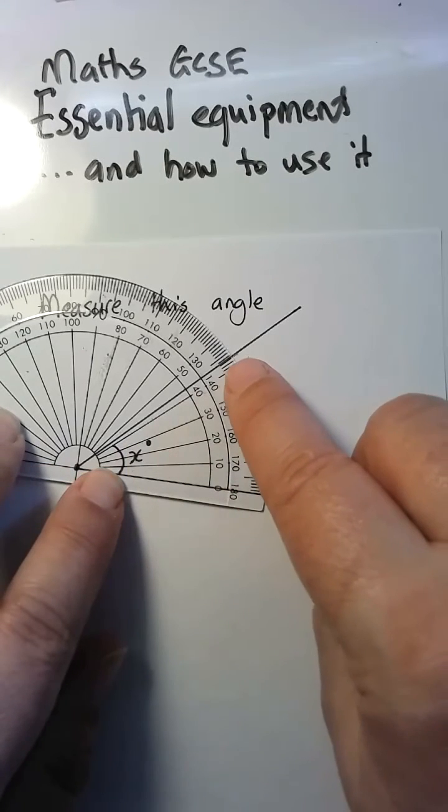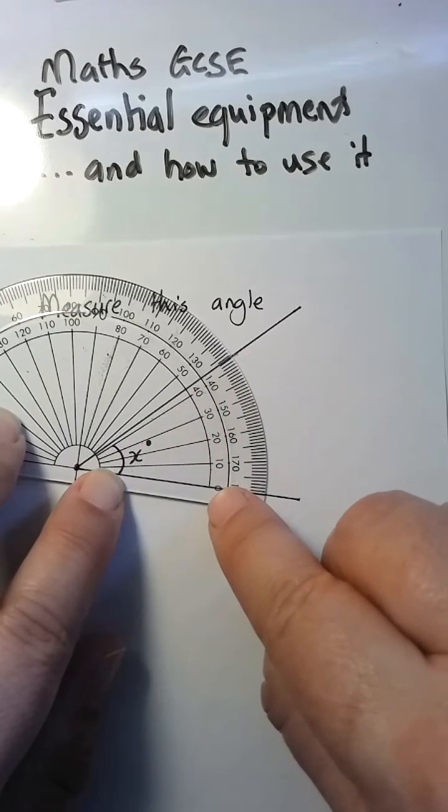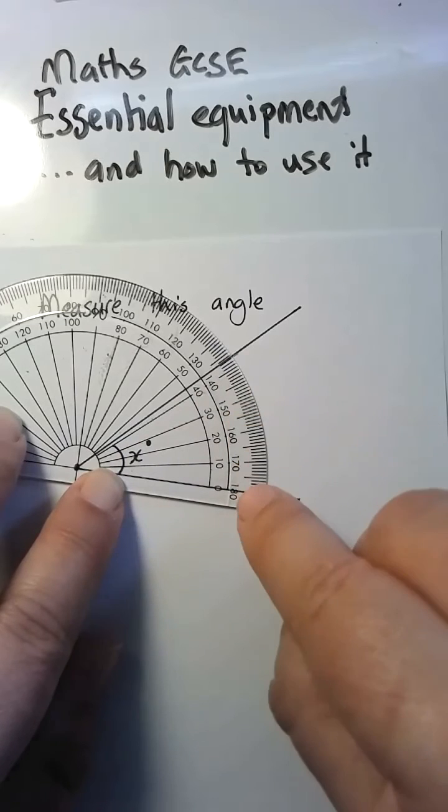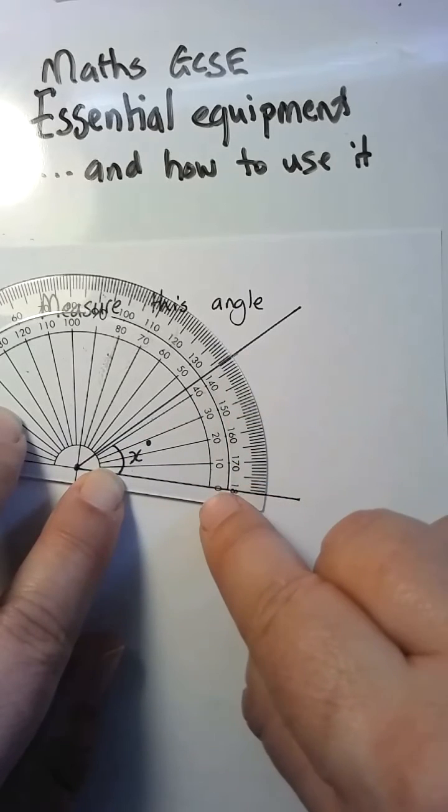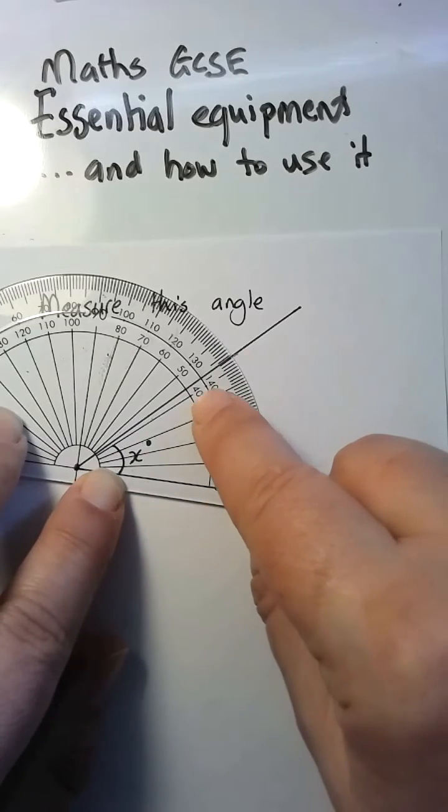Then what I do is I look up at this scale. Now I'm going from zero, and this is really important. This starts at 180, and I could count this way, but this isn't the angle I need. I need to always start from zero at the start of my angle. So I'm going from zero, and I'm going up to 40.